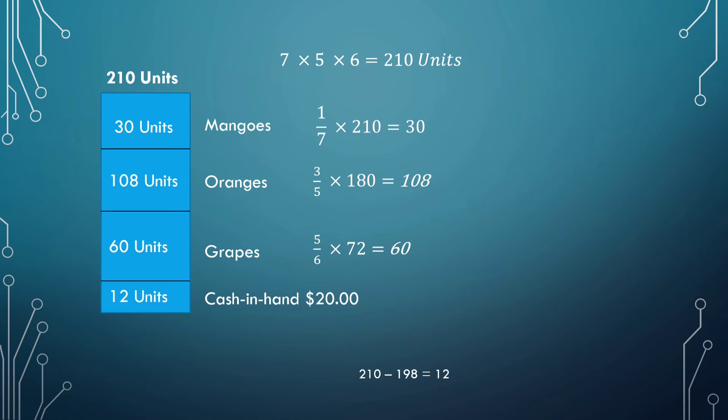Now, we are ready to solve the problem. If 12 units represents $20 cash in hand, we can use another arm of the box method. That is, when we divide a square into 4 parts and we have one of the parts representing the units, the other part representing the value or the cash.